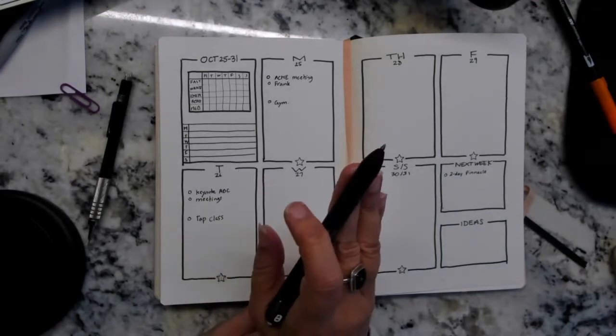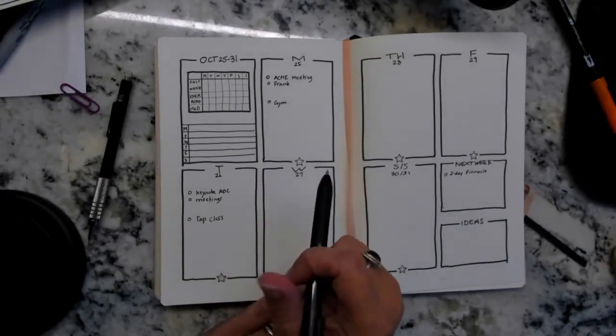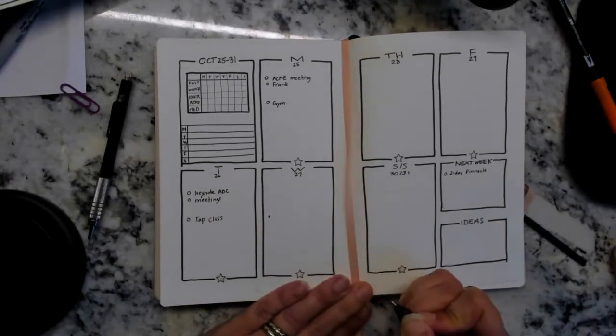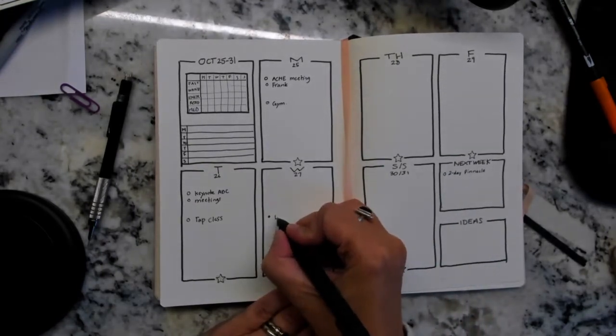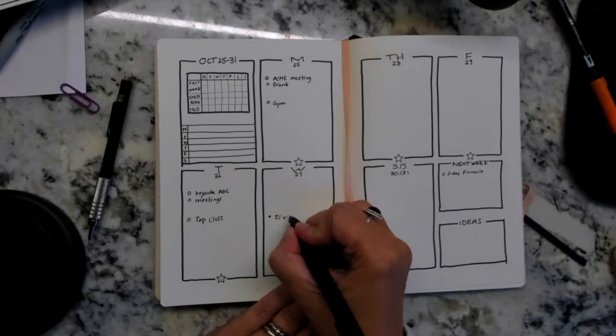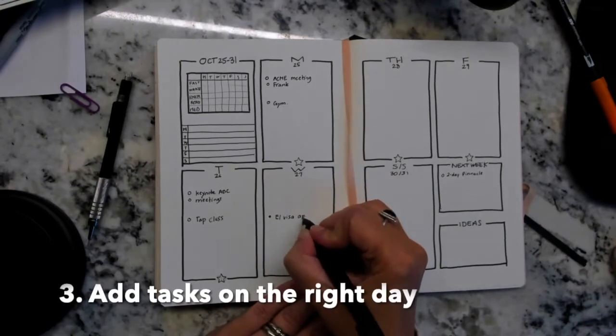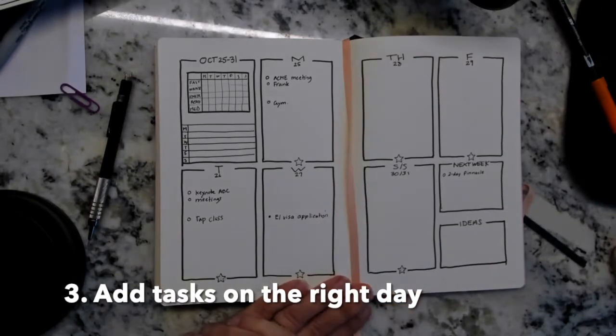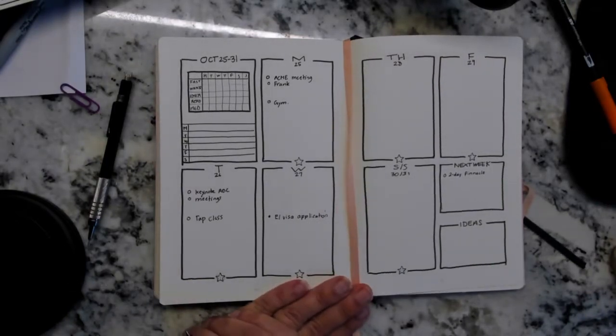But I know I have a bunch of stuff on Monday and a big keynote on Tuesday, so I'm not actually going to do that immigration stuff until Wednesday. So when it's a task, you just put a solid dot and I put, you know, work on my E-1 visa application.